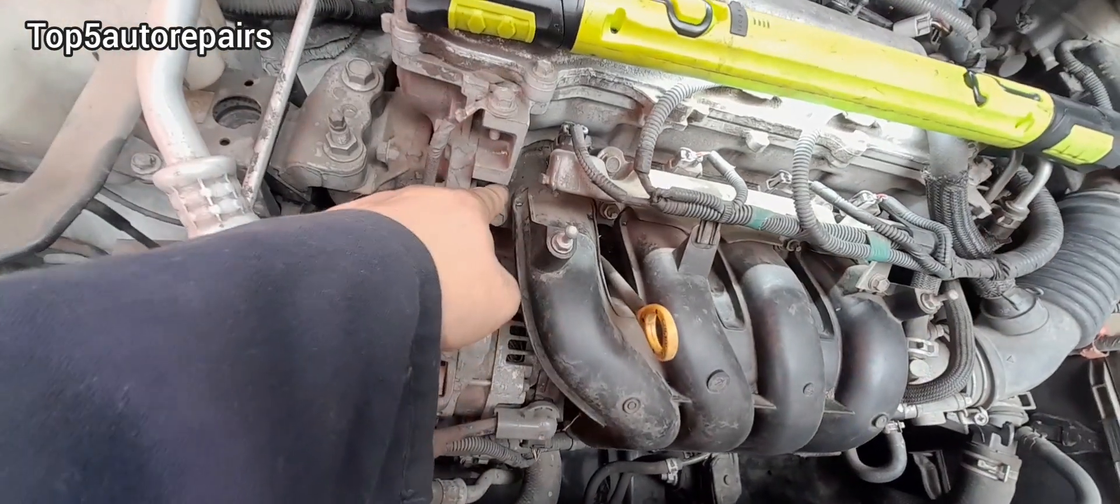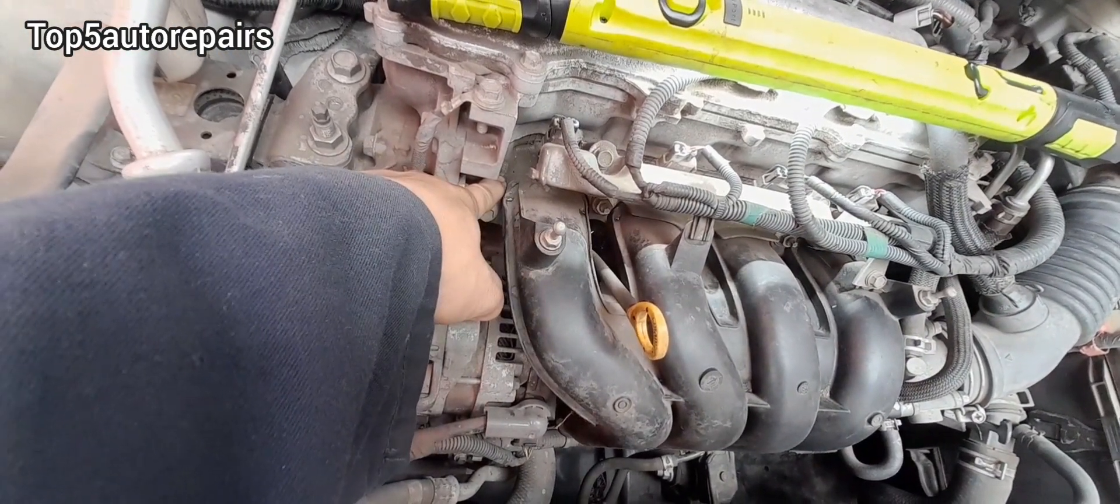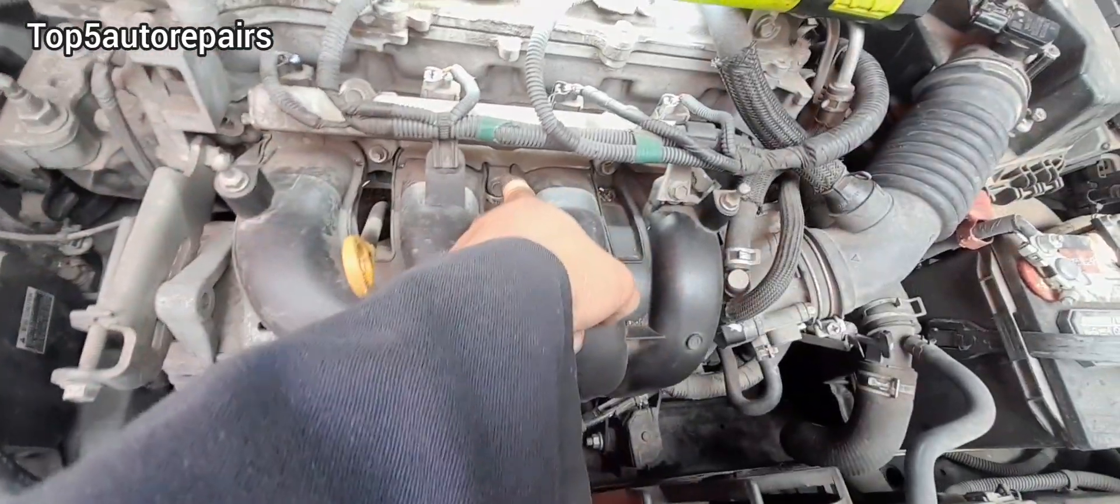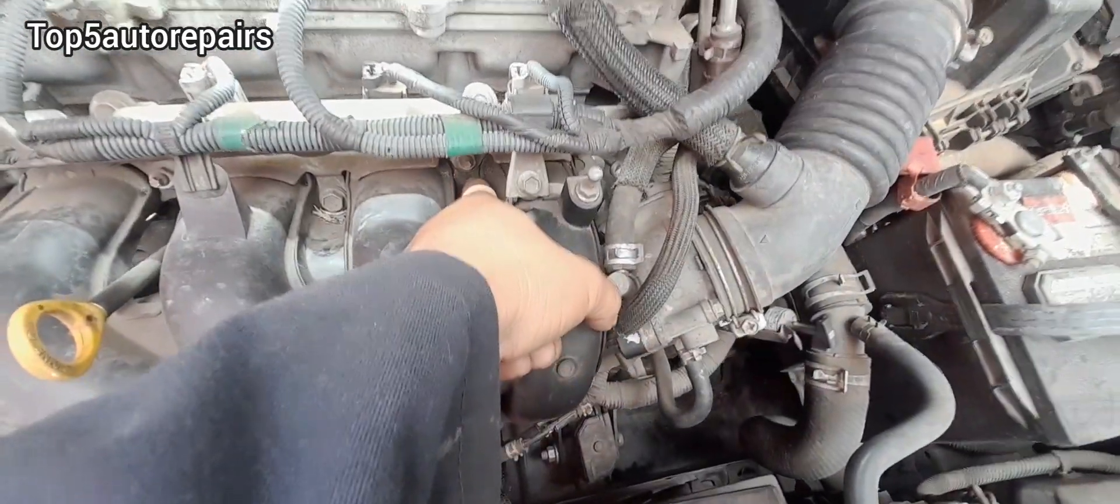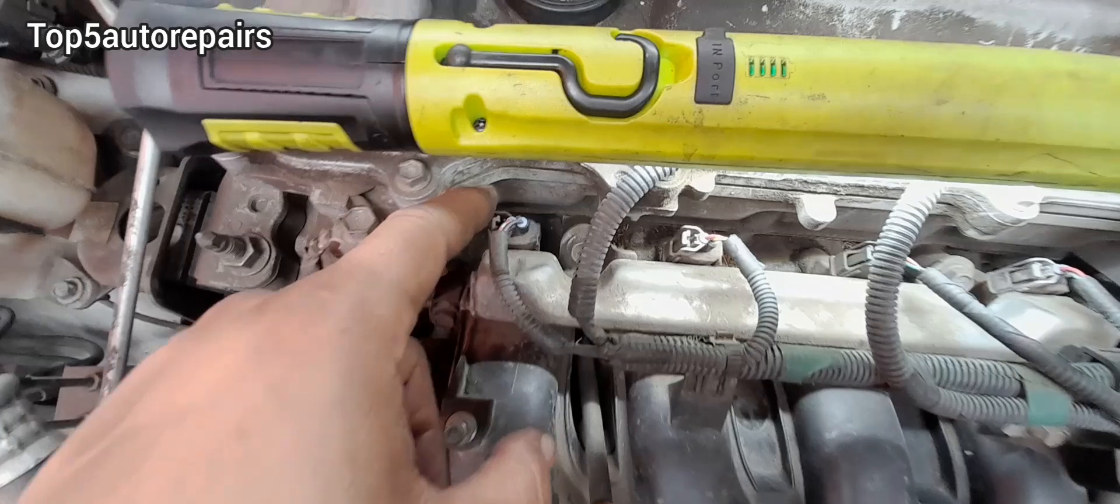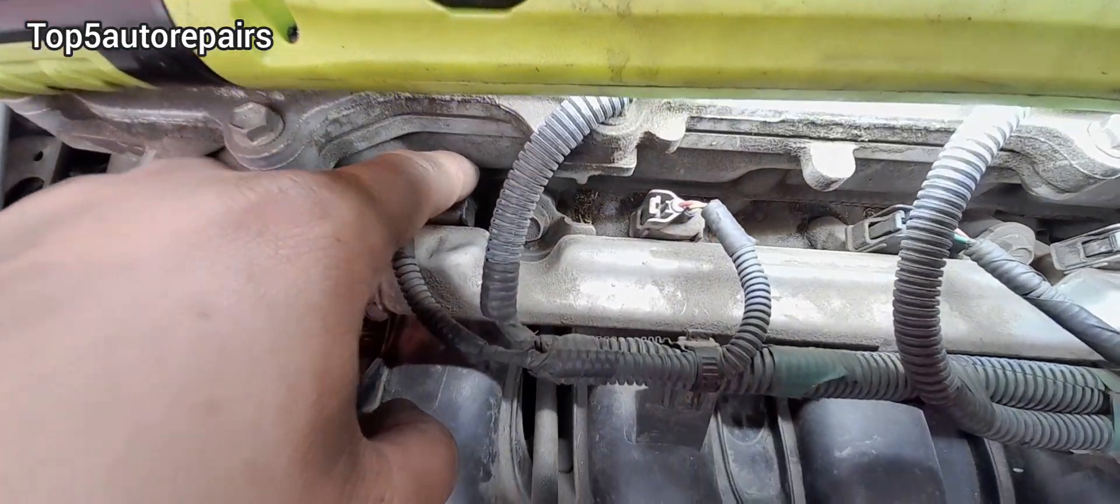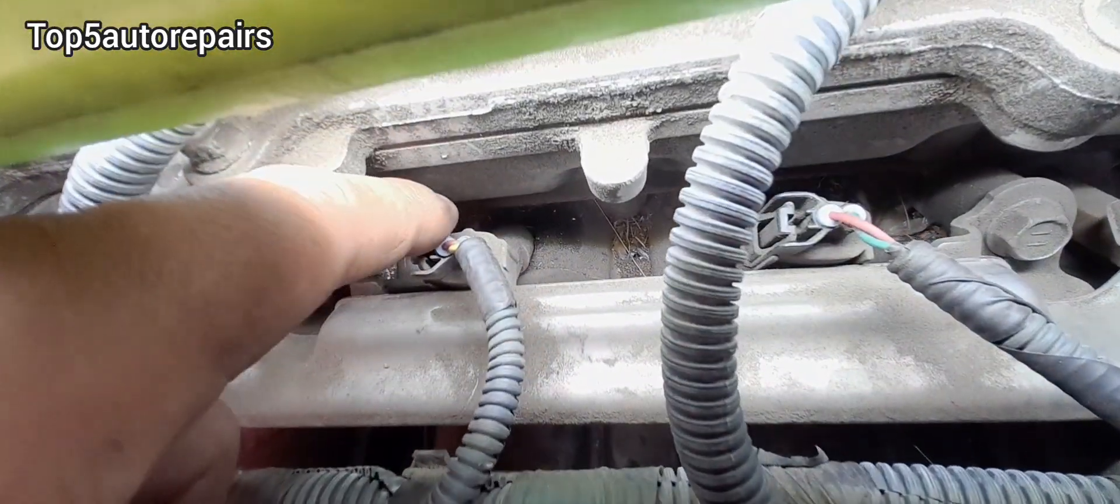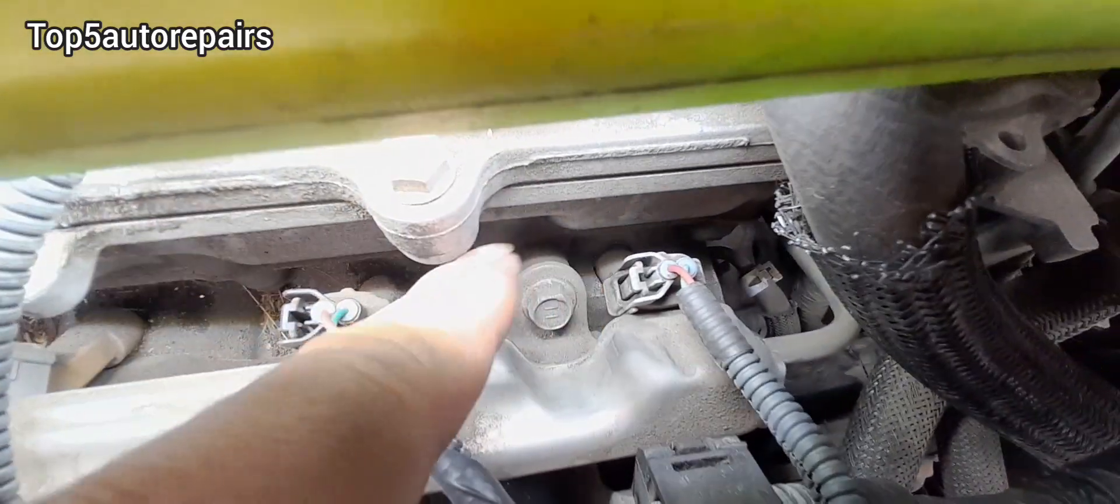First, check for vacuum leak right at the intake manifold gasket. For some vehicles, it might also come with an intake plenum, so check that as well. Next, check for bad fuel injector seals. If those seals are bad, it can also cause a vacuum leak.